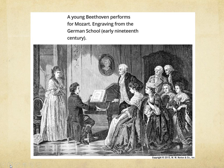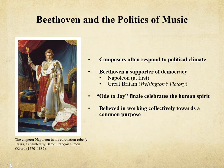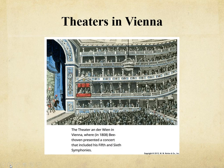In this engraving from the German school in the early 19th century, you see a picture of young Beethoven performing for an older Mozart. Composers often respond to political climates, and Beethoven was no exception. He was a supporter of democracy and the revolutions that were occurring. He supported Napoleon at first, until he declared himself emperor, and then he rejected him. Beethoven's Ode to Joy finale celebrates the human spirit, and he believed in working collectively towards a common purpose. This is an example of an 18th century Viennese theater where one might have heard Beethoven's fifth or sixth symphonies.